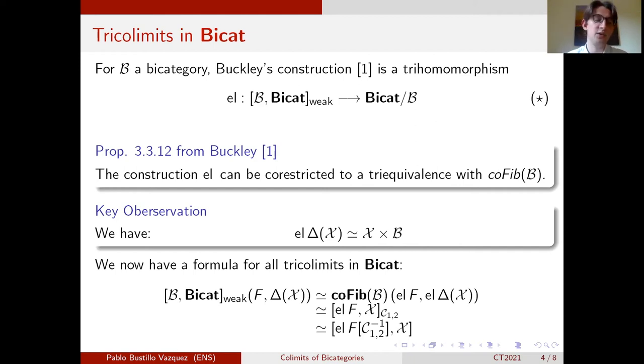So on the left-hand side here, you have the bicategory of cocones on f of apex x. On the right-hand side, you have a translation by Buckley's result that says that it's some sort of bicategory of cocartesian functors, which by definition is some sort of bicategory of functors from the Grothendieck construction to x that will send all cocartesian arrows and two cells to equivalences.